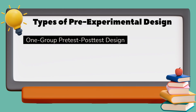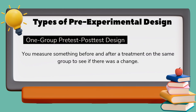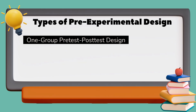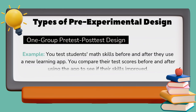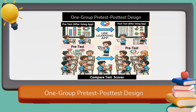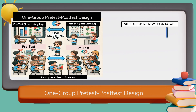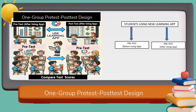In one-group pre-test post-test design, you measure something before and after a treatment on the same group to see if there was a change. For example, you test students' maths skills before and after they use a new learning app. By comparing their scores from the first test to the second test, you can see if there was an improvement in their math skills after using the app.